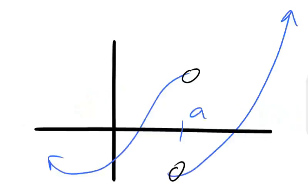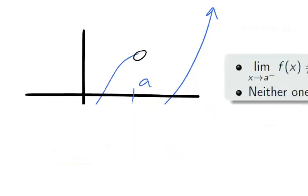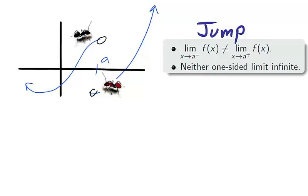The next graph shows a jump discontinuity at x equals a. A jump discontinuity is the case where the one-sided limits both exist but the two-sided limit fails to exist. Notice that the ants can only meet at x equals a if they jump to another level.